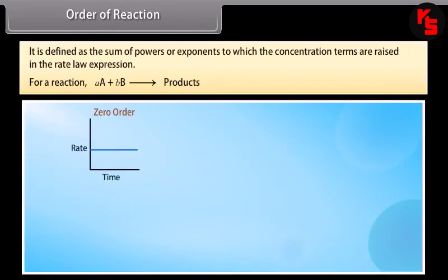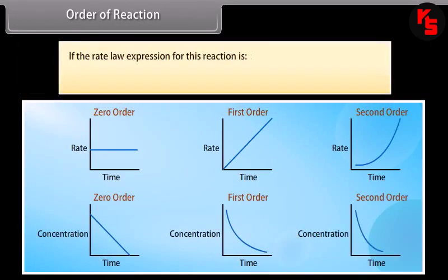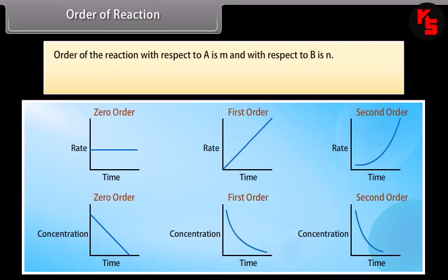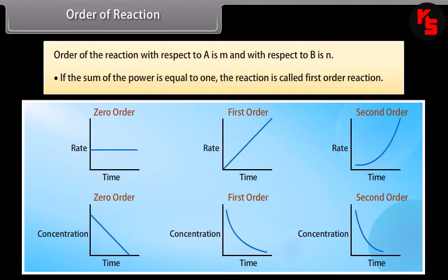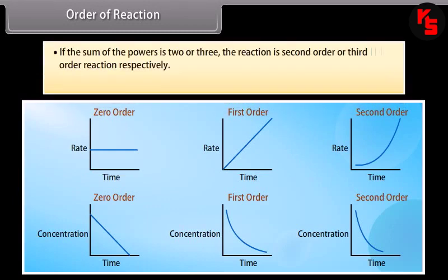Order of reaction is defined as the sum of powers or exponents to which the concentration terms are raised in the rate law expression. For rate = K[A]^m[B]^n, the order equals m + n. Order with respect to A is m, and with respect to B is N. If the sum of the powers equals 1, the reaction is first order; if 2 or 3, it is second or third order respectively. The order of a reaction can also be 0 or fractional.